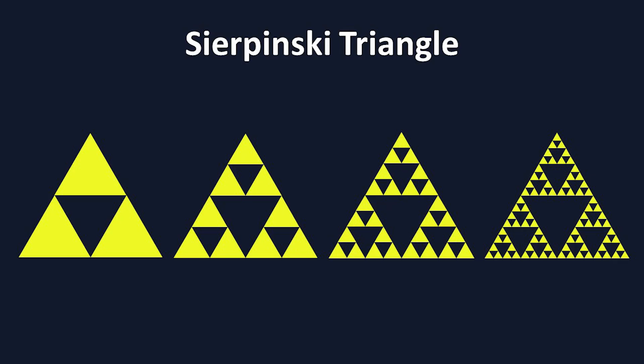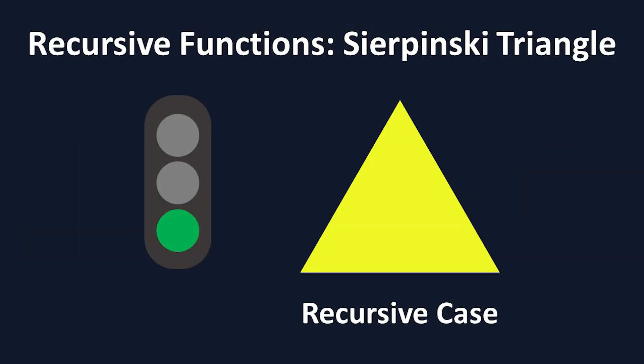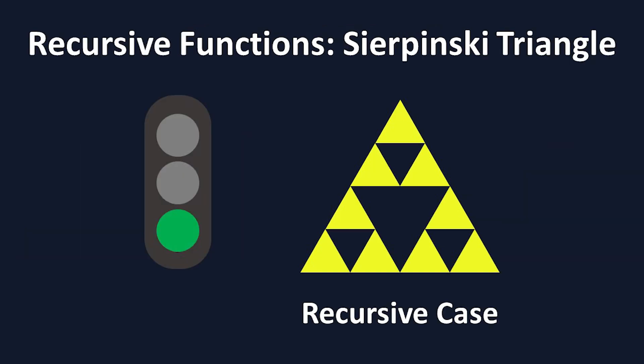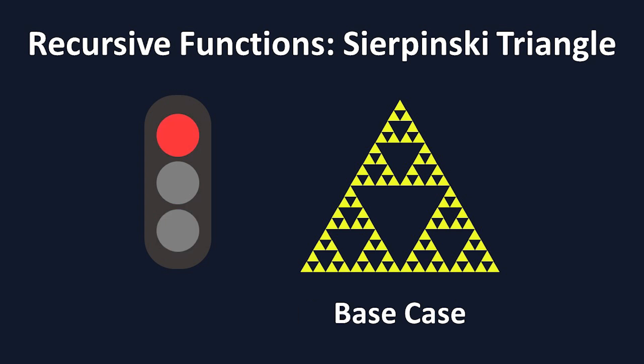Let's relate this to our Sierpinski triangle. Our recursive case is the set of instructions that will cause the function to run over and over with the smaller triangles each time, and our base case will tell the function to stop once we've reached the smallest size.